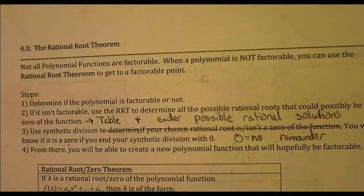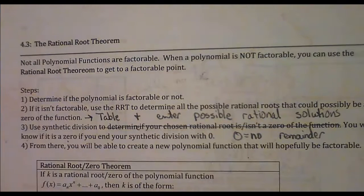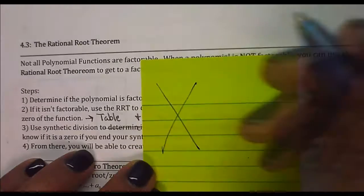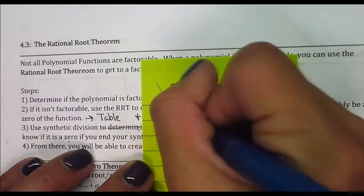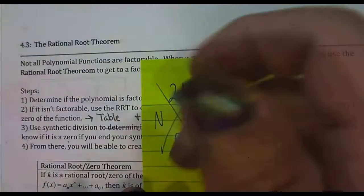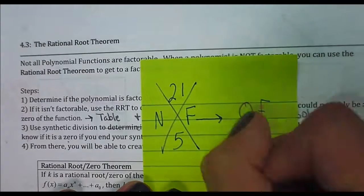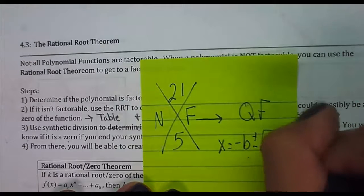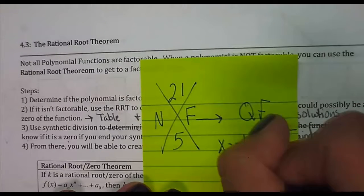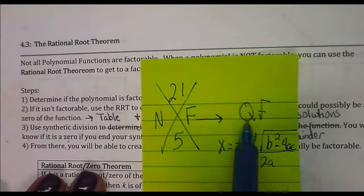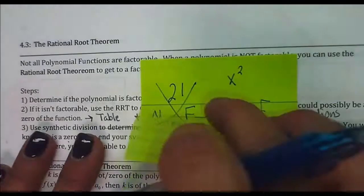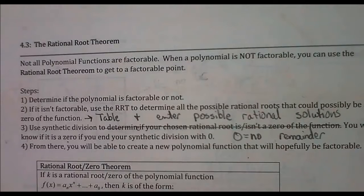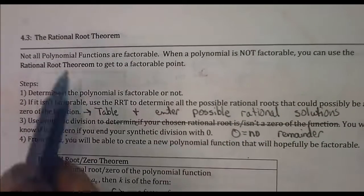When we first started with quadratics and tried to factor, there were times you couldn't factor. If I were trying to find factors of 21 that make 5, I wouldn't be able to, and in my class we'd say NF for not factorable. When it wasn't factorable, we'd move into the quadratic formula as our backup method. But the quadratic formula only works with quadratics — when our leading term is x squared. Since in this chapter we're working with much higher exponents, we can't use the quadratic formula, so we need another backup method: the rational root theorem, or RRT.